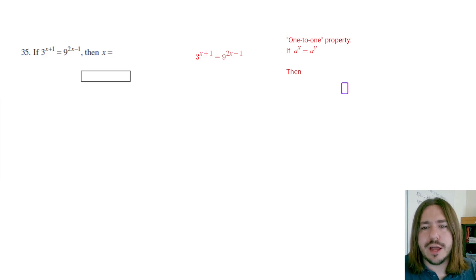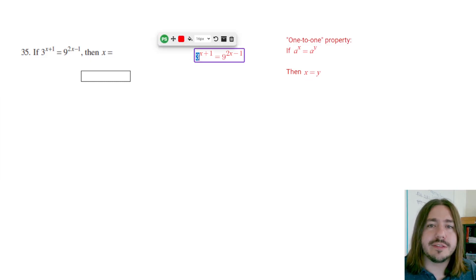So if a to the x equals a to the y, if the bases are the same, then the two exponents are going to equal each other. So we're going to take advantage of this property here. We can't right away because 9 and 3 are not the same number. So we can't just drop the bases and set the exponents equal to each other. What we have to do is rewrite 9 as a power of 3.